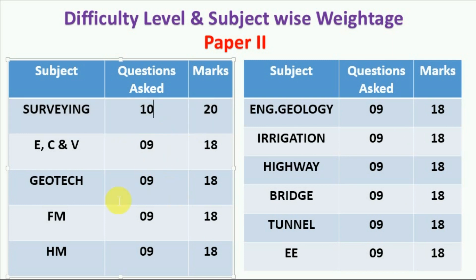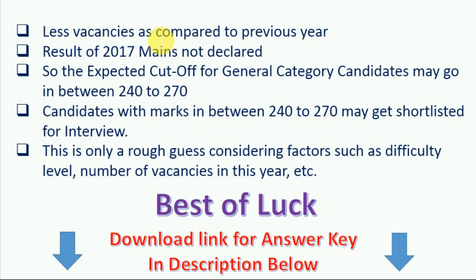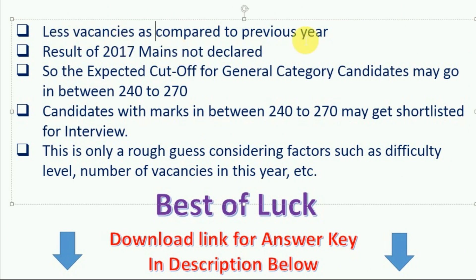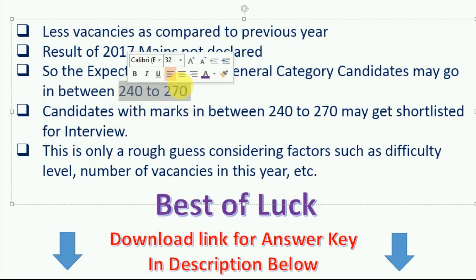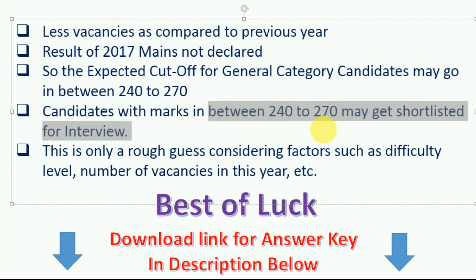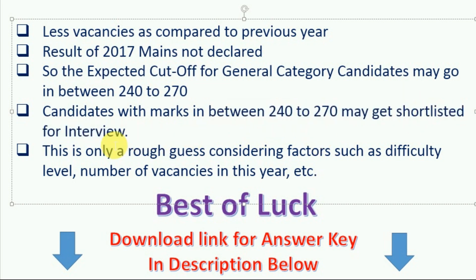Considering some other factors such as lesser vacancies compared to the previous year and the result of the 2017 Mains exam still not declared — if all these factors are considered, the expected cutoff for general category candidates may go in between 240 to 270 marks. Candidates with marks in between 240 to 270 may get shortlisted for interview. However, this is only a rough guess considering factors such as difficulty level and number of vacancies this year.